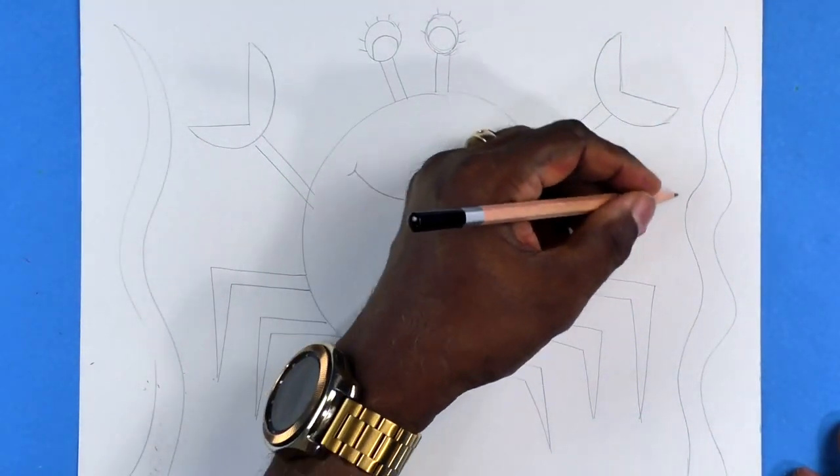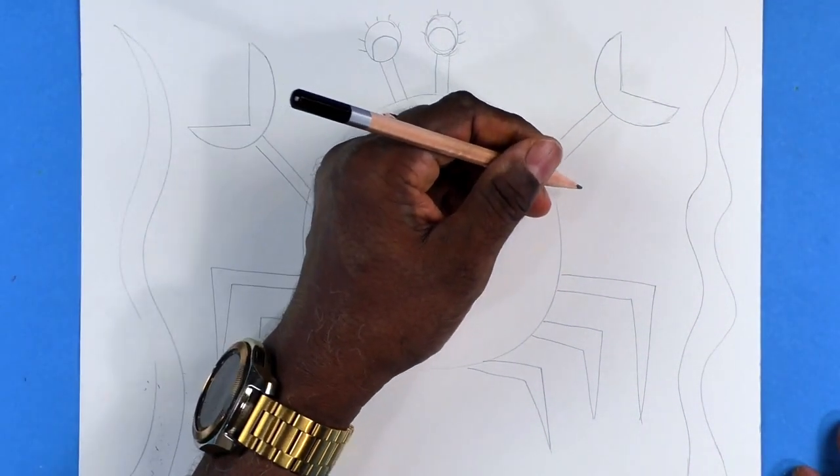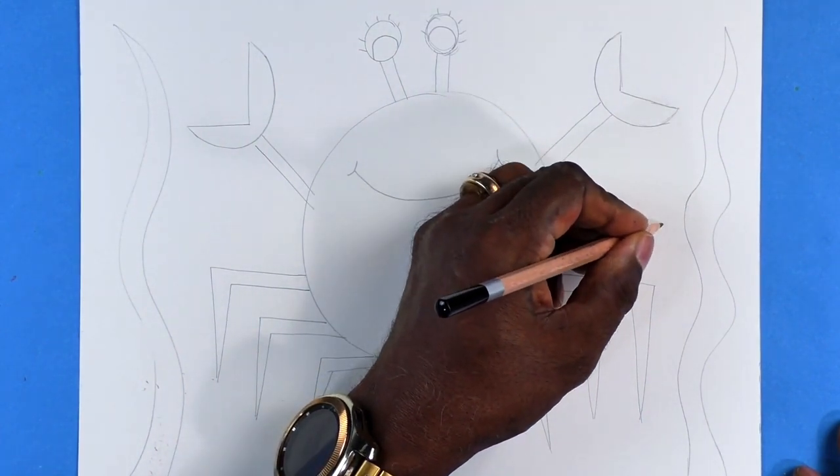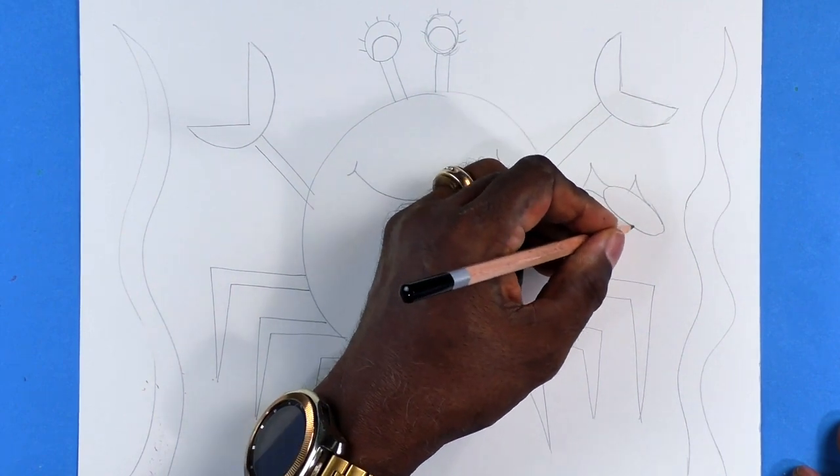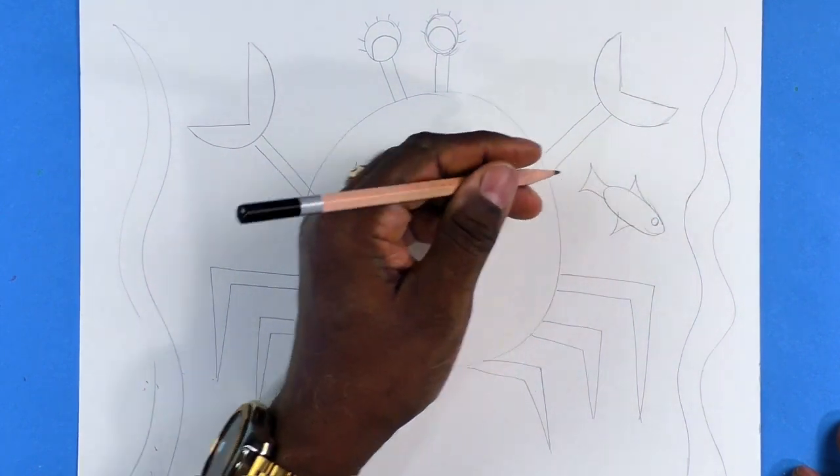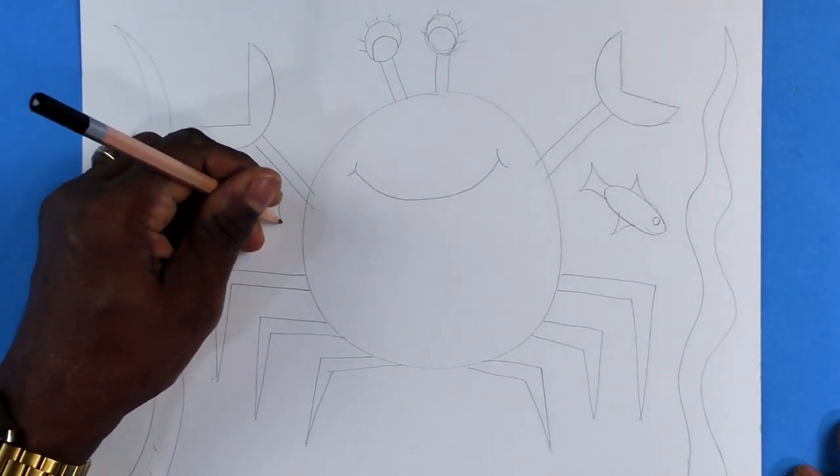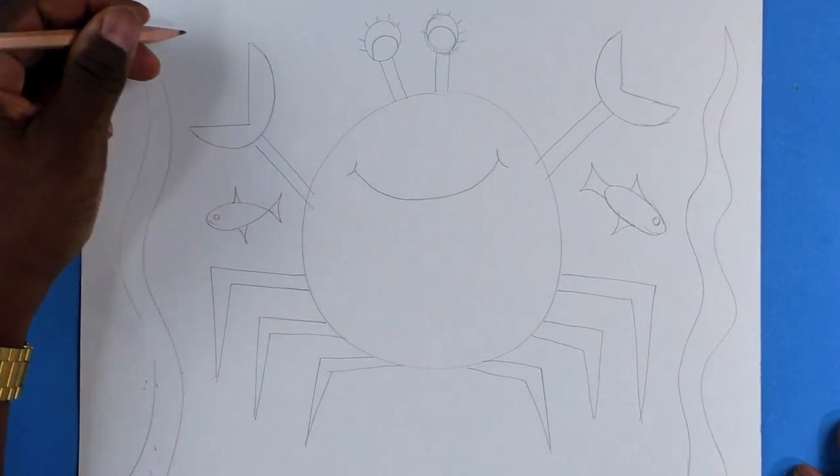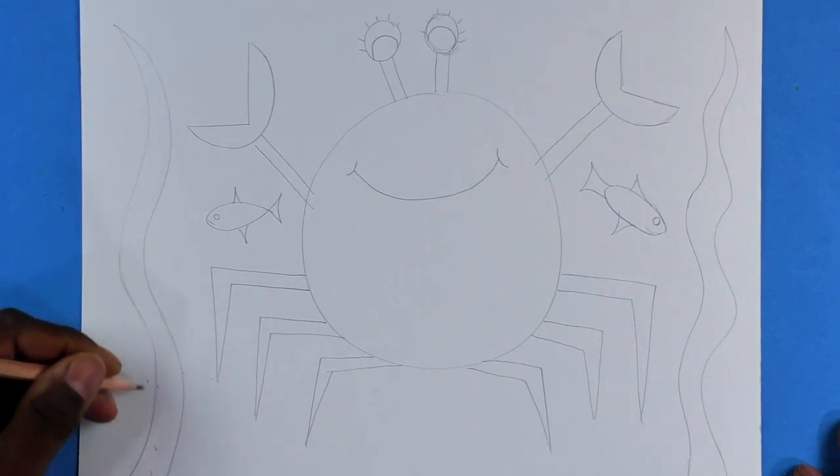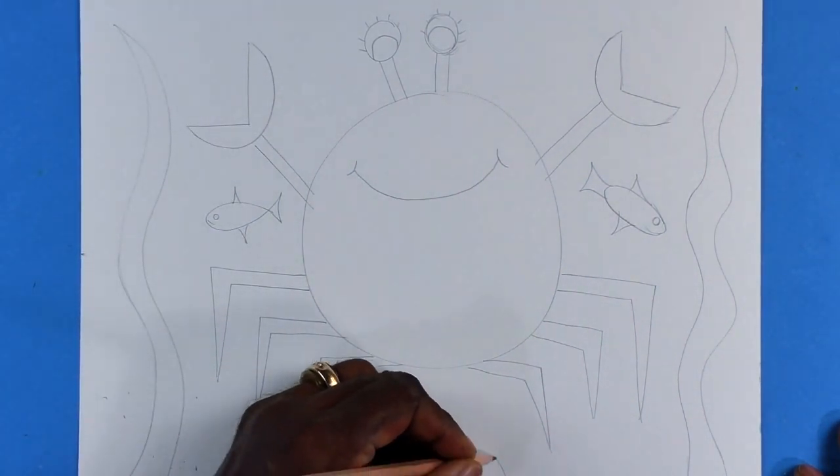How about if we make some fish? Fish are so easy. I can make an almond shape and put some triangles on the ends. Let's do it on both sides. We can have big ones, small ones, medium sized ones.